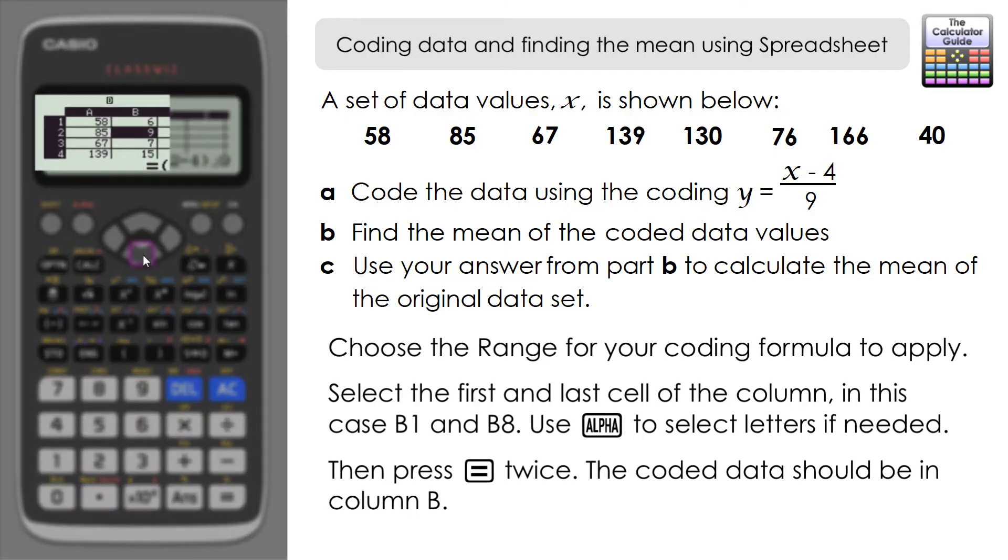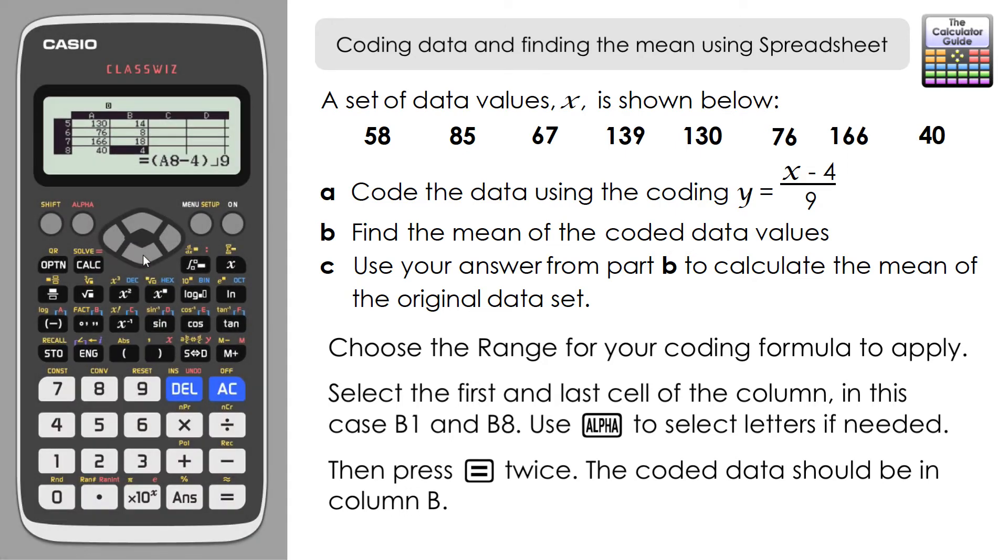Here we have the list in column B of our coded data. If necessary, we could write these down to show what the values would be once they've been processed through the code. Now the second part, we need to calculate the mean.